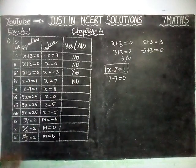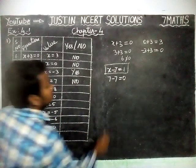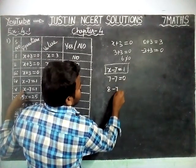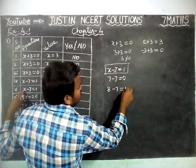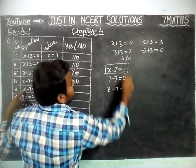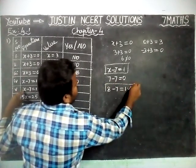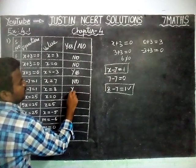Next we are going to substitute X is equal to 8: 8 minus 7 is equal to 1, so this is satisfied. Therefore this is yes.